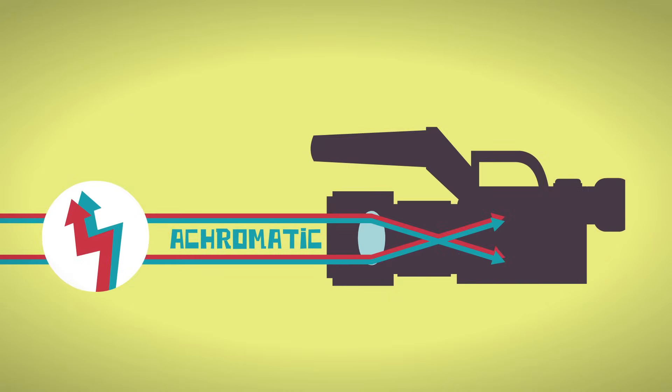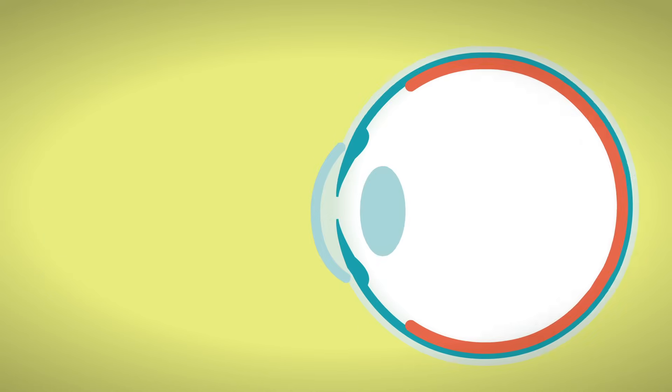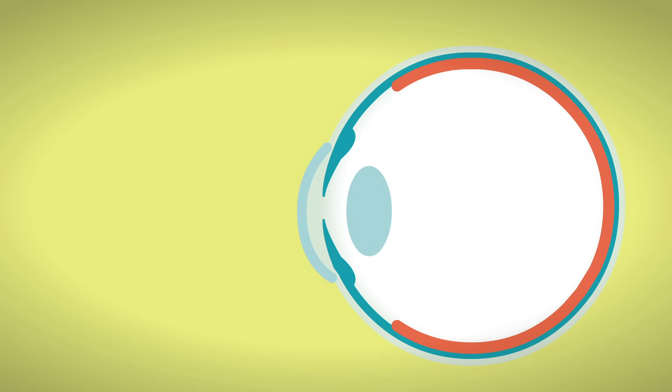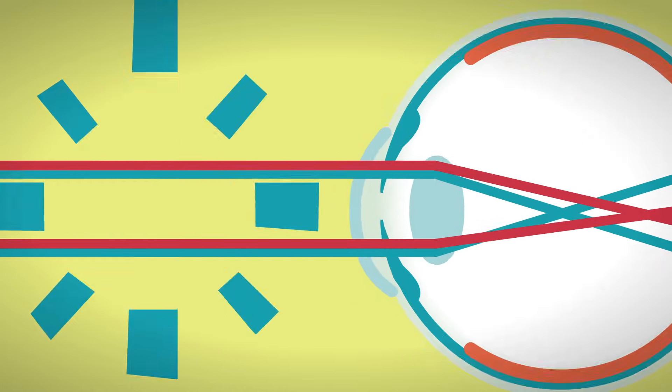Most camera lenses are also achromatic, meaning they focus both red and blue light to the same point. Your eye is different. When red light from an object is in focus, the blue light is out of focus. So why don't things look partially out of focus all the time? To answer that question, we first need to look at how your eye and the camera capture light.